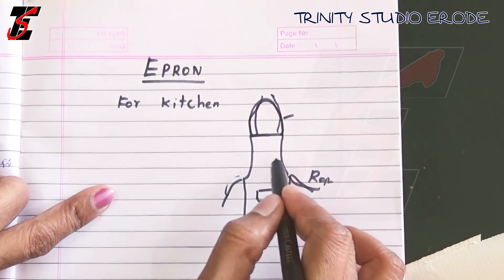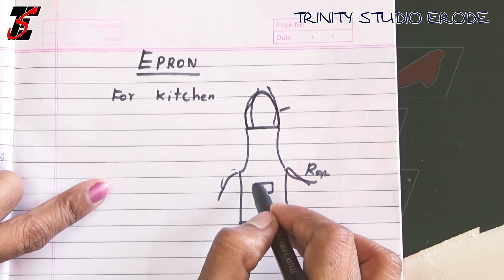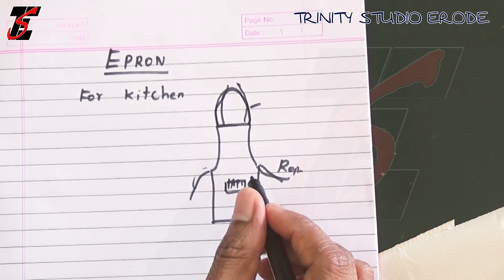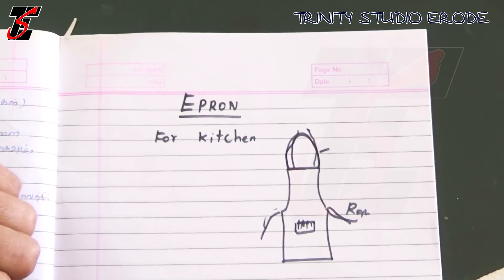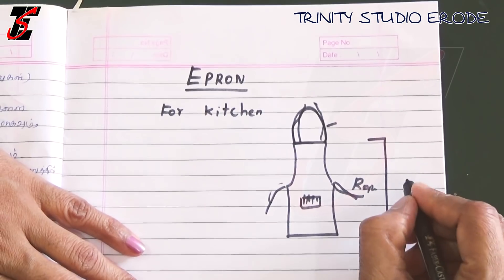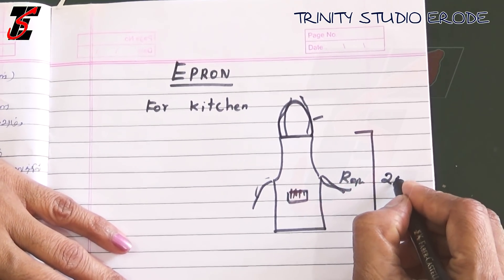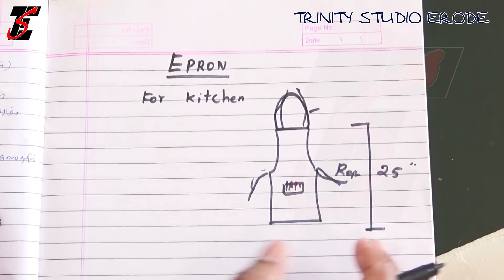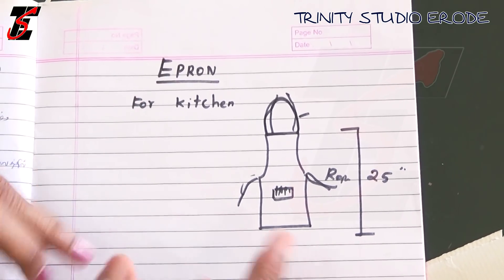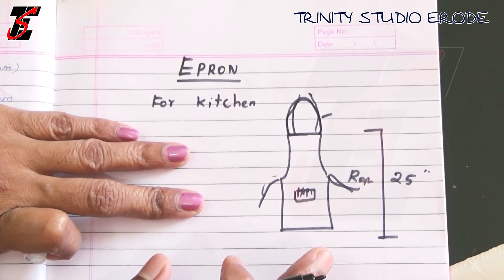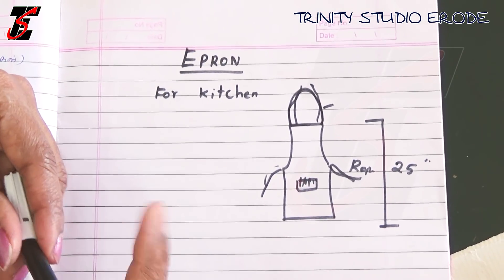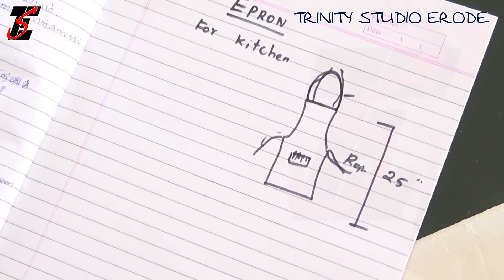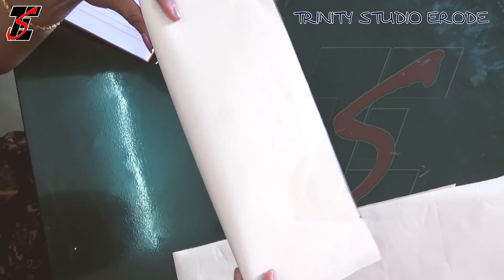We have our apron dress. You can also use it in a parlour. Now for the outer cutting — the length is the length. We are going to cut it at 25 inches in a simple shape. This pattern is applied directly to the cloth.